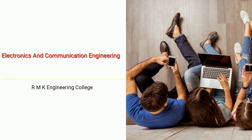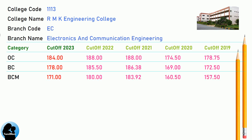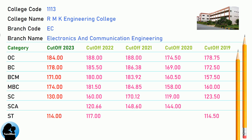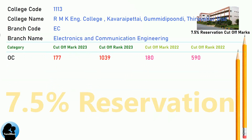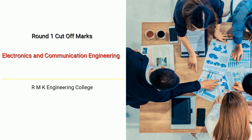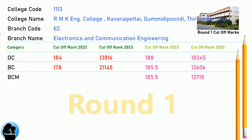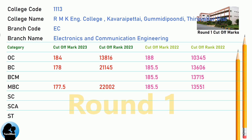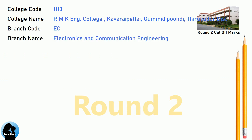DNEA Cut-off, DNEA 7.5 Reservation Cut-off, DNEA Round 1 Cut-off, and DNEA 8.5 Reservation Cut-off for RMK Engineering College in Electronics and Communication Engineering.